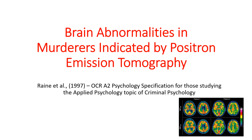Today we're going to cover brain abnormalities in murderers indicated by positron emission tomography. This study was done by Raine et al. in 1997 and is part of the OCR A2 psychology specification for applied psychology and particularly criminal psychology. A positron emission tomography is a scan done using radioactive injection and some type of glucose, and it allows you to monitor the metabolism in different parts of the body — in this case, the brain.